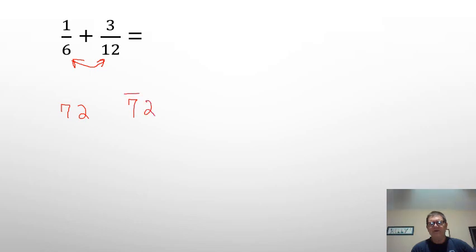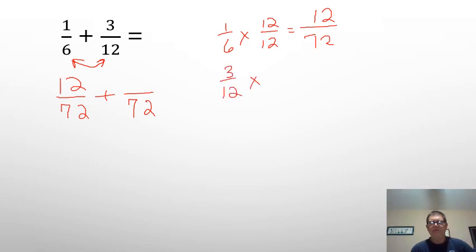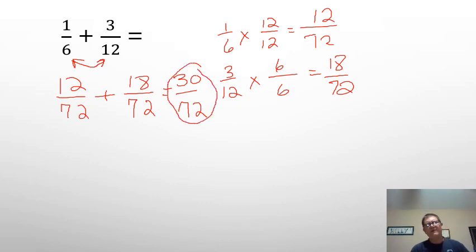I'm going to convert both of these to 72. I would end up having to multiply 6 by 12 to get 72, so that means I'd have to multiply the numerator by 12. I end up with 12/72. For the 3/12, I would end up having to multiply that by 6/6, which gives me 18/72. So my final answer would be 30/72. And more than likely, this answer is not going to be available on your multiple choice, so you're going to have to reduce this.